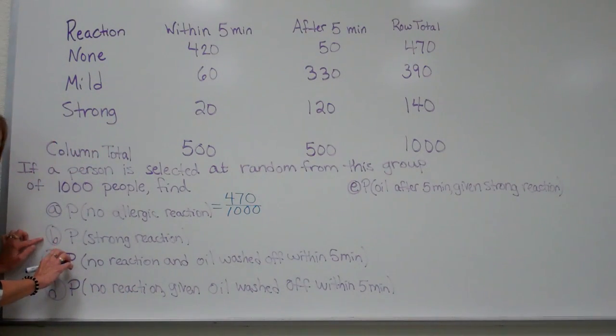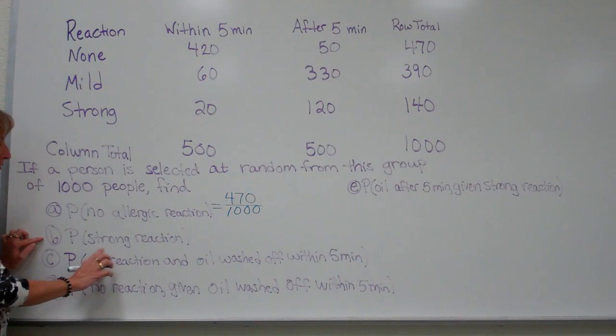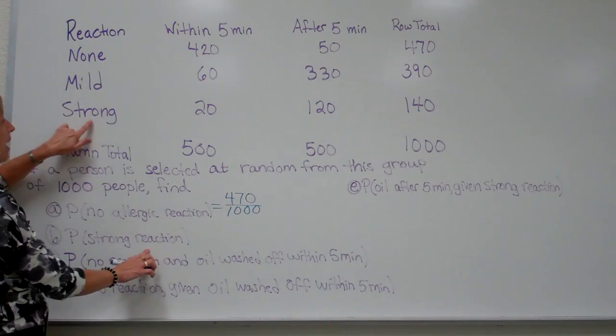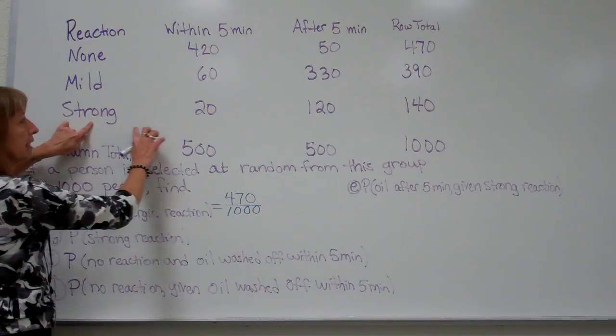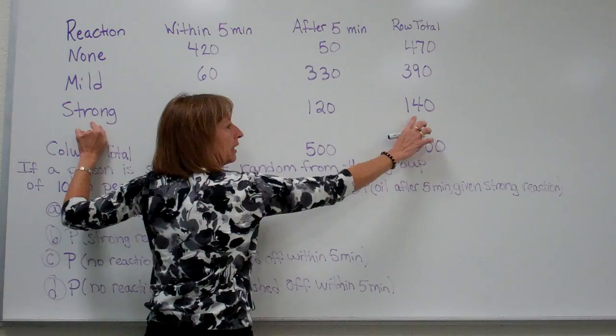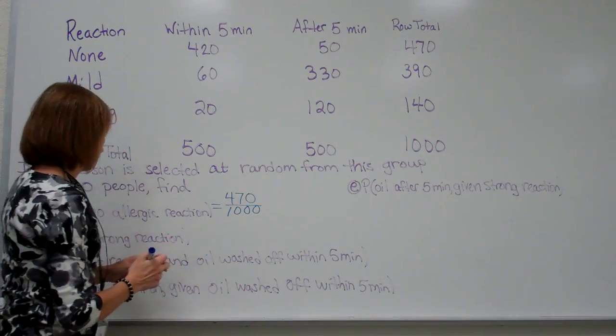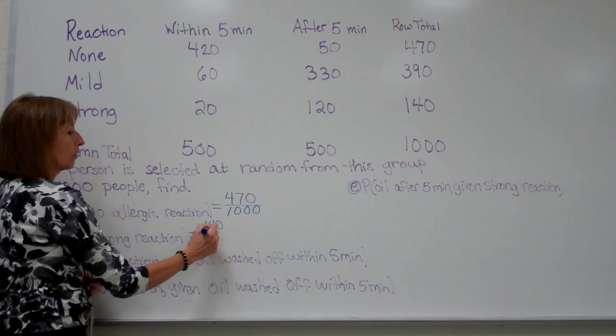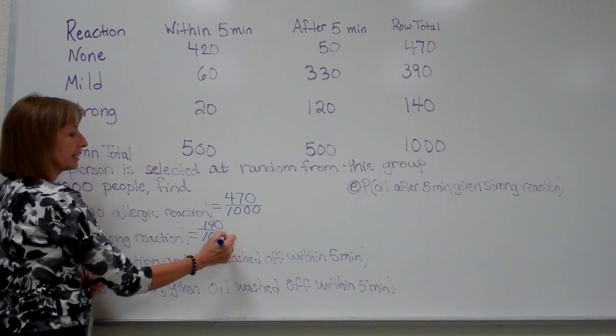The next question is find the probability that there's a strong reaction. So again, I look and see where I have strong reaction and it's this entire row. So the total of that row is 140 divided by the total of 1000. So I have my 140 over 1000 as my probability.